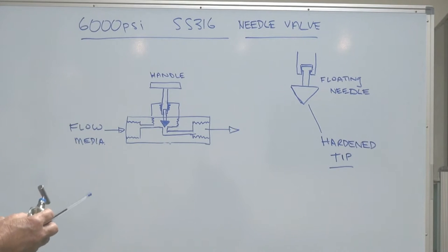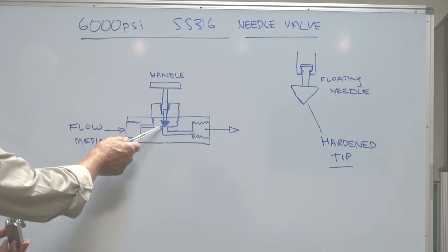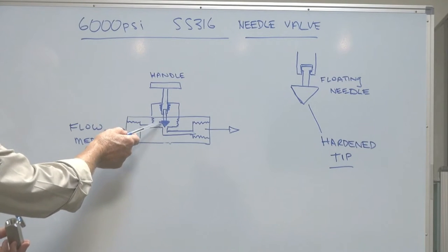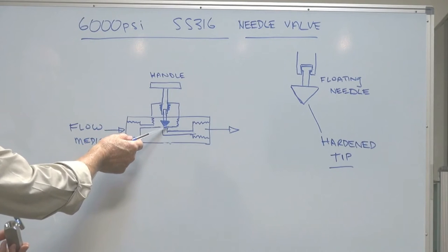They're not a full flow valve. They actually have a small orifice inside with a hardened tip - a floating tip. There's a handle, and you screw this up and down, and the needle will go into the orifice.